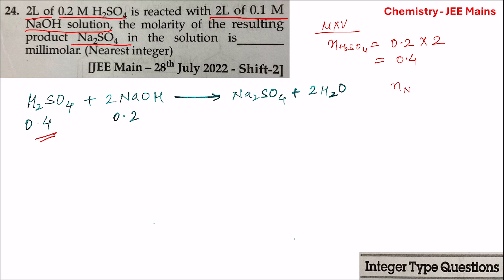Moles of NaOH will be equal to molarity of NaOH, that is 0.1, multiplied by volume of NaOH, that is 2 liters. So the number of moles of NaOH is 0.2 moles. So moles of NaOH present is 0.2 moles.